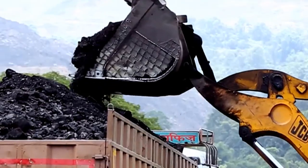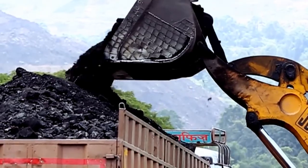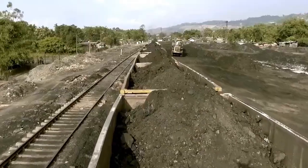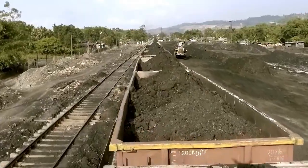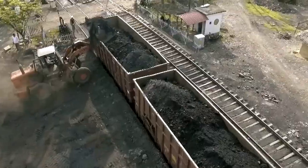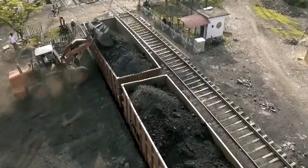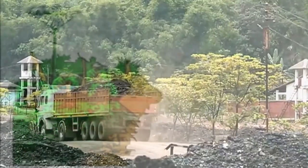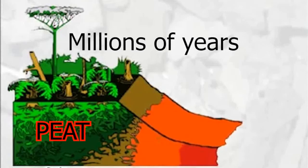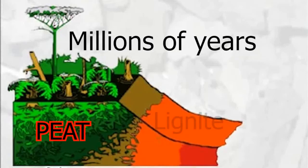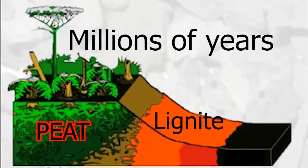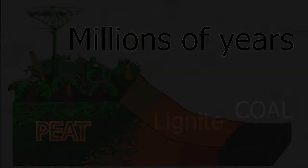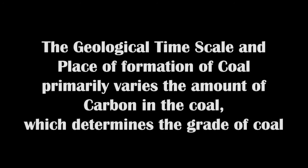India is endowed with a rich variety of mineral resources due to its varied geological structure. Coal is one of the important minerals, mainly used in the generation of thermal power and smelting iron ore. Millions of years ago, dead plant matter fell into swampy water, and over time a thick layer of dead plants lay decaying at the bottom of the swamps.